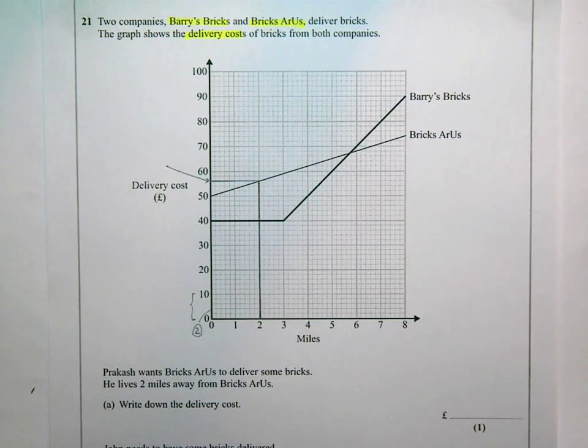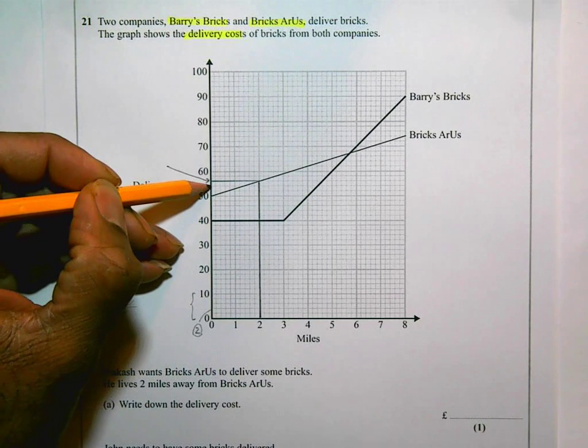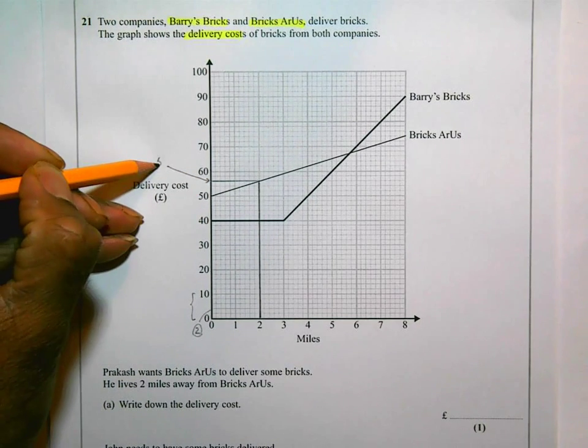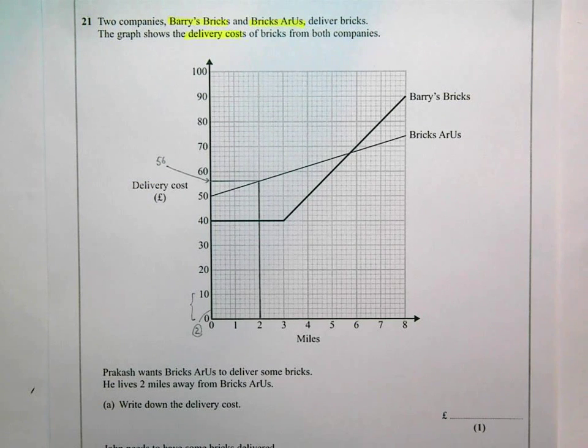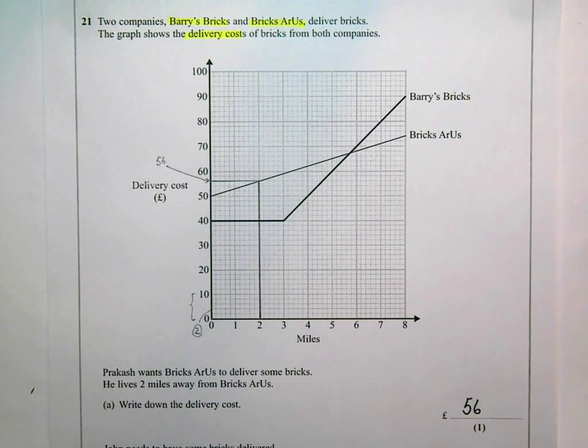So up here, if that's 50, that's 52, 54, 56. So that bit there is going to be 56 pounds. And that's what I'm going to write in my answer space, 56. The pound sign is there already.